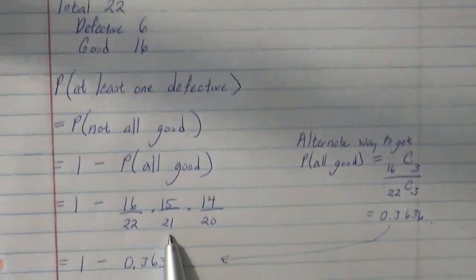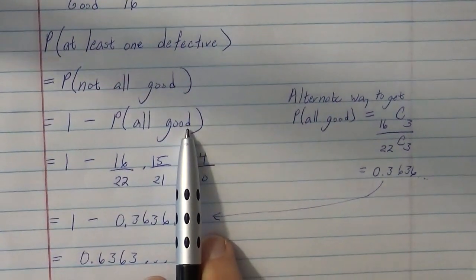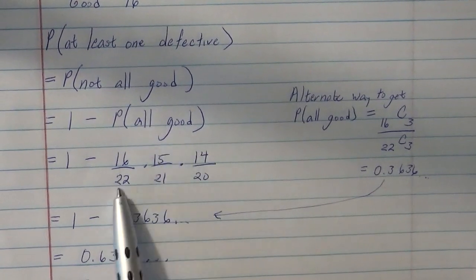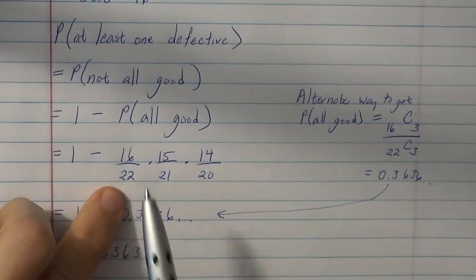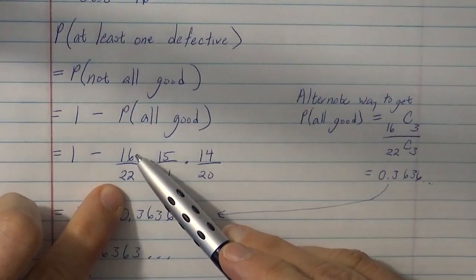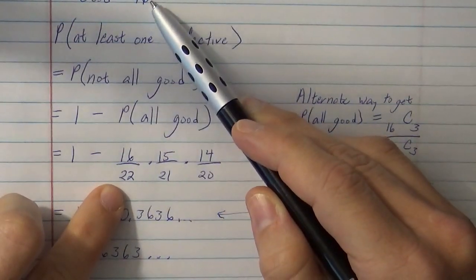So to find the probability that all of them are good, there are two methods of doing that. The simplest method that you kind of learn in 7th grade is that the probability that the first one is good is there are 16 good ones out of 22,